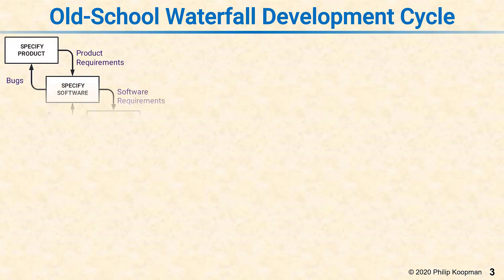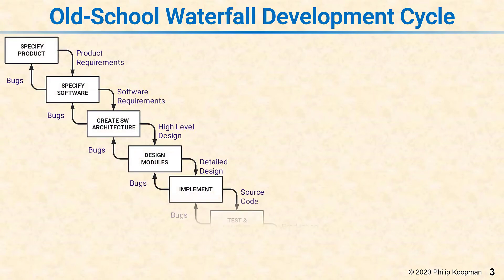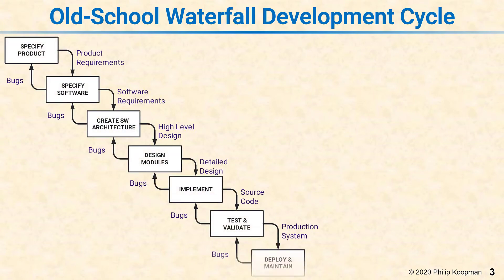All those activities have to be organized somehow, and the way they're organized is called the software development process. Here's a picture of an old-school waterfall development cycle, and it's called a waterfall because things flow down from the top left down to the bottom right.